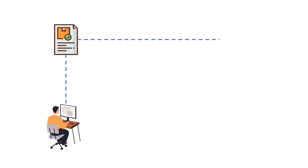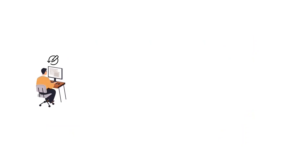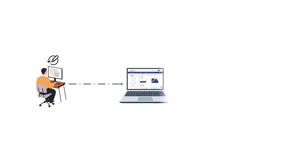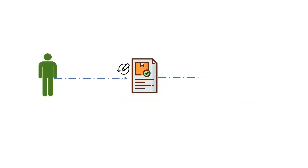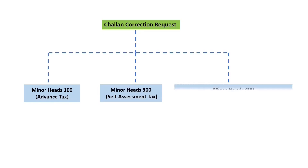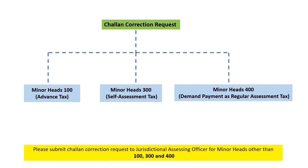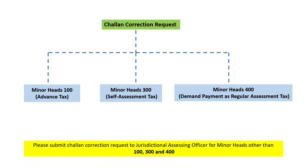Please note that the Chalan Correction Service is presently available for chalans pertaining to assessment year 2021 onwards. For chalan correction pertaining to years prior to assessment year 2021, you are requested to approach the jurisdictional assessing officer. Also note that chalan correction requests will be allowed only once on the e-filing portal. Chalan correction is only available for minor head 100 (advance tax), minor head 300 (self-assessment tax), and minor head 400 (regular assessment tax for demand payment) and their corresponding major heads.